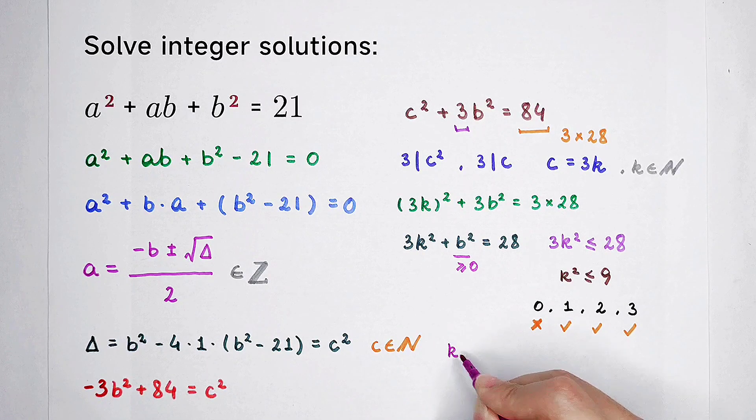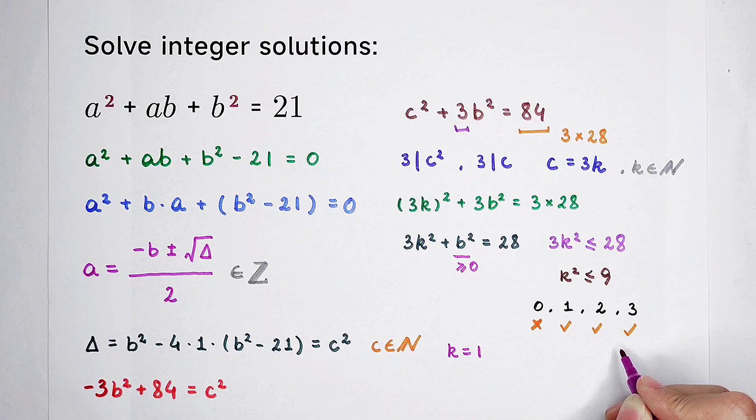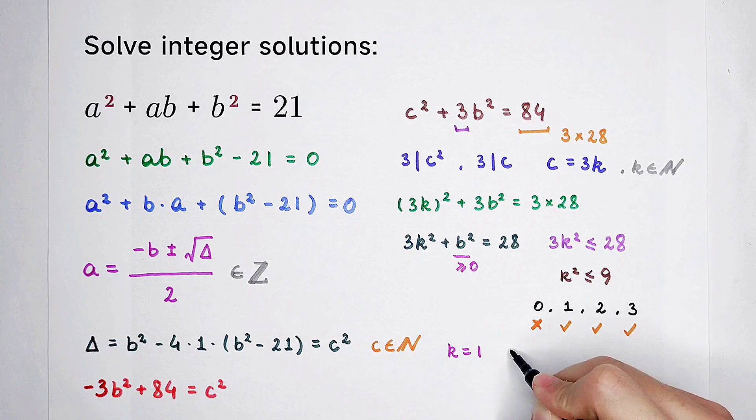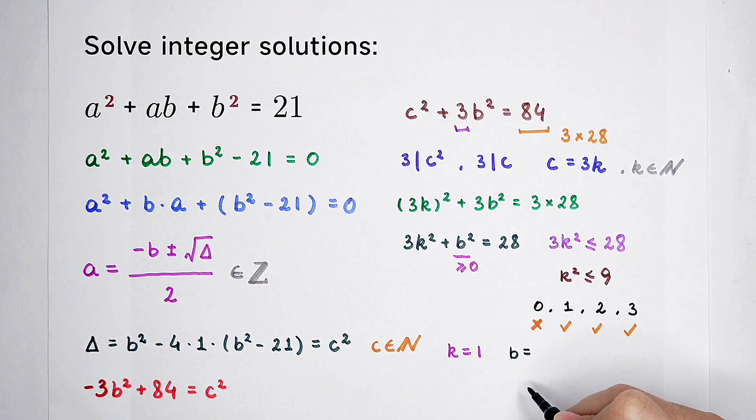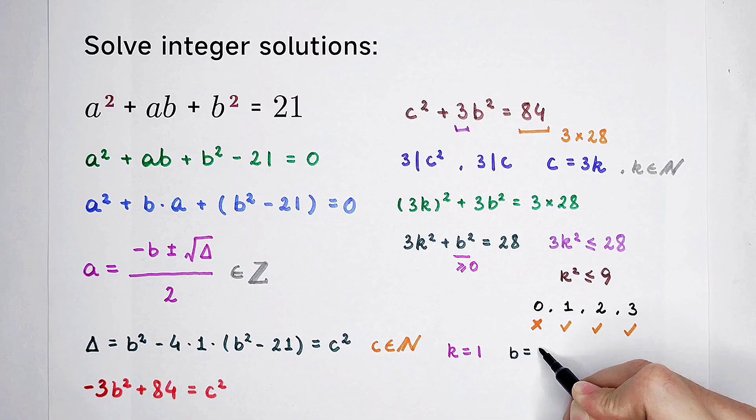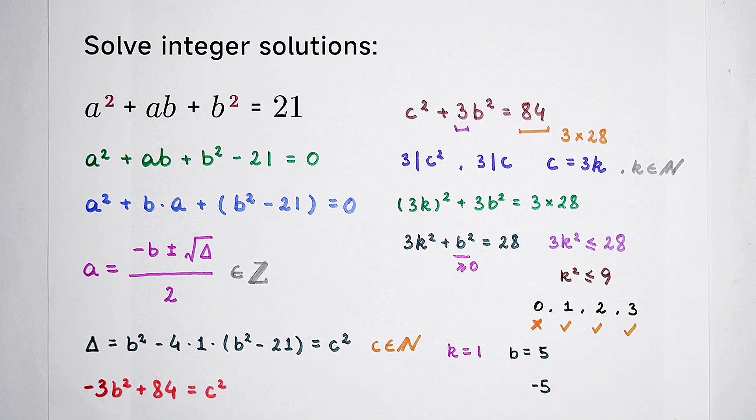For example, for k is equal to 1, I can show you the solutions. But for k is equal to 2 and 3, you should do it yourself by the similar way. Then, b is equal to 5 or negative 5.